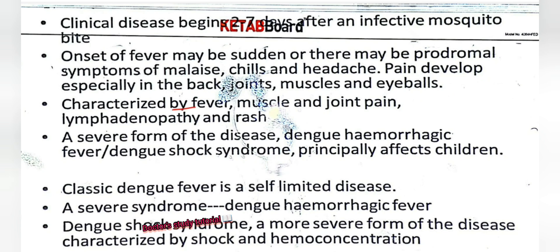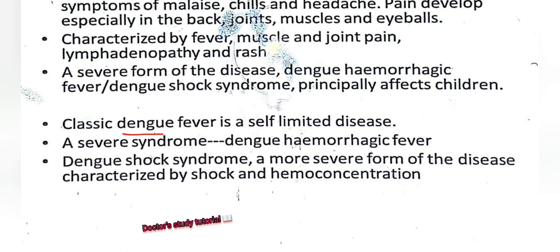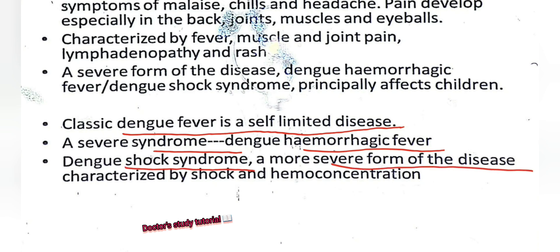It is characterized by fever, muscle and joint pain, lymphadenopathy, and rash. A severe form of the disease — dengue hemorrhagic fever or dengue shock syndrome — principally affects children. Classic dengue fever is a self-limited disease, whereas dengue hemorrhagic fever and dengue shock syndrome are more severe forms.